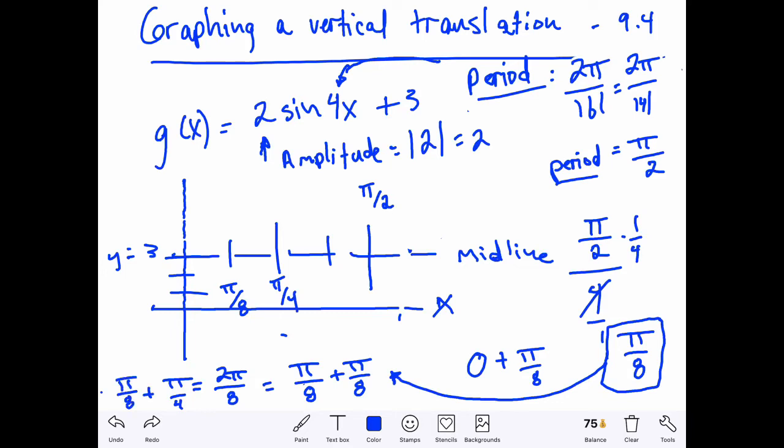Then remember once I have pi fourths I'm going to add again that pi eighths to my pi fourths. Well I have to multiply this one by two over two, so that would be pi eighths plus two pi eighths which would be three pi eighths. And then if I added another pi eighths to it that would be four pi eighths, which is again pi halves, which we already have here.